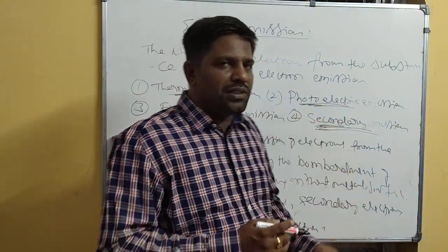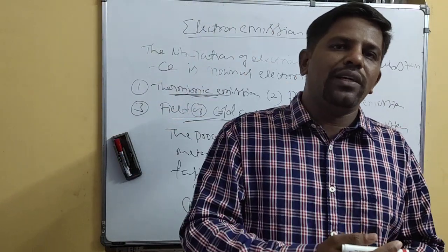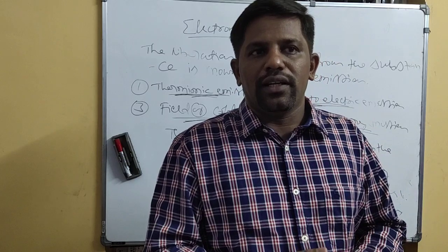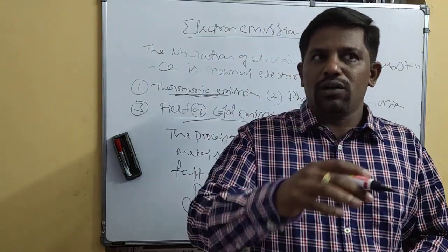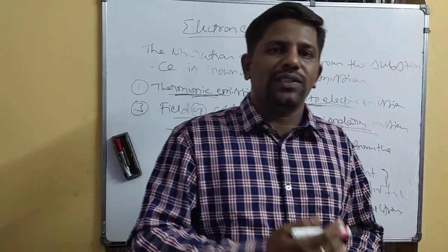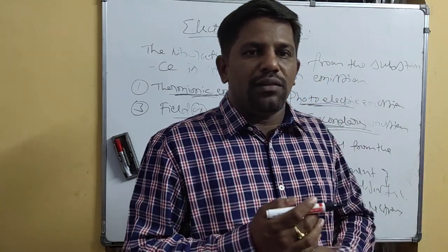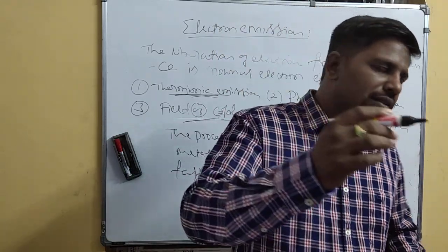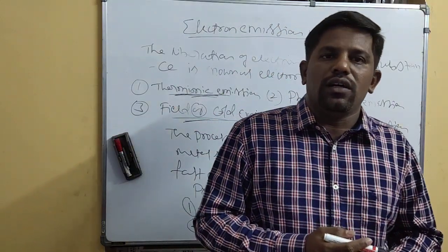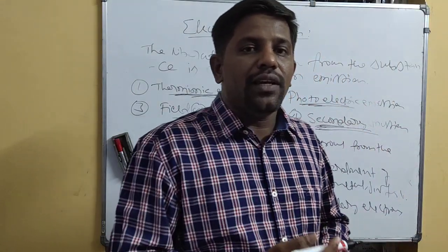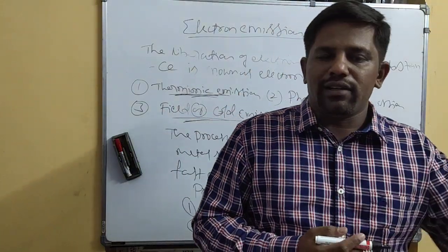In Secondary Emission, electrons are obtained from a metal surface by the bombardment of fast-moving electrons called Primary Electrons; the ejected electrons are called Secondary Electrons. Their number depends on the nature of the substance and the number of primary electrons. This is about the four types of Electron Emission.